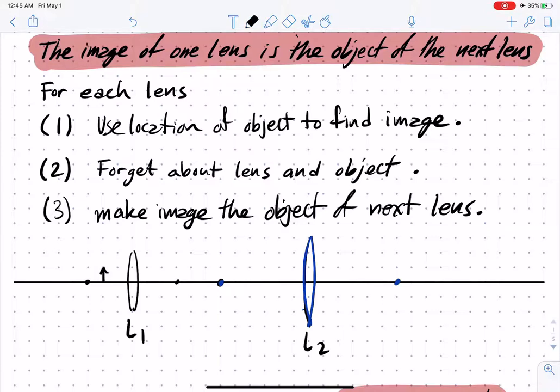So we can construct the rays coming off of here using the principal rays. We see that the image is back here.